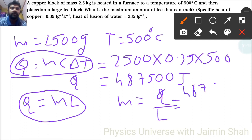So 487,500 upon L is 335. So upon 335 we will get 1455.22, and that is in grams.